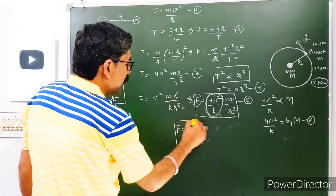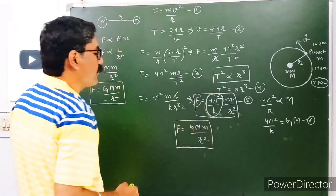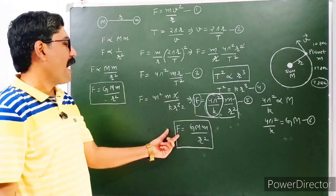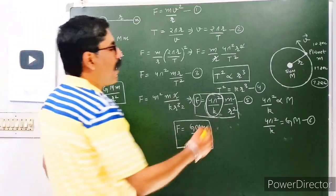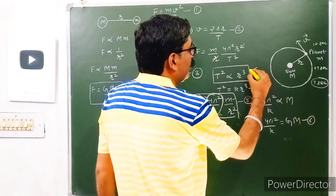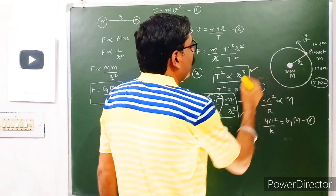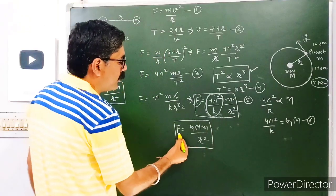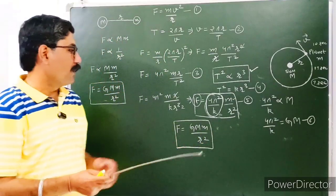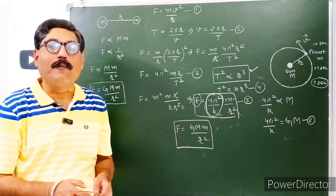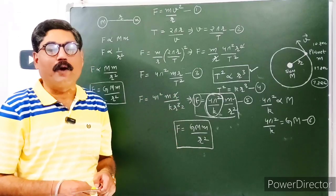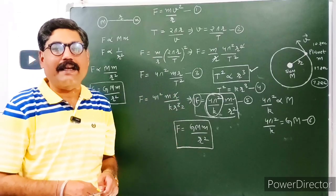So this is Newton's law of gravitation, which was the required result. Newton's law of gravitation can be easily derived from Kepler's law of planetary motion. In fact, we have used Kepler's third law of planetary motion to deduce Newton's law of gravitation. This was the topic you need to write in the exam. I hope you understood this topic. Let us meet with another important topic — till then, take care.